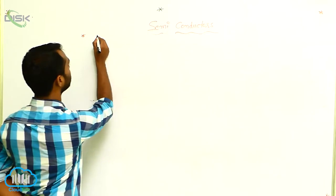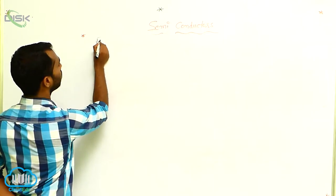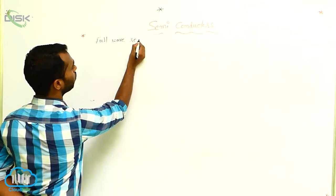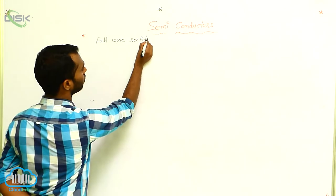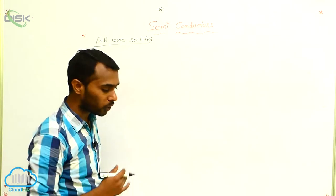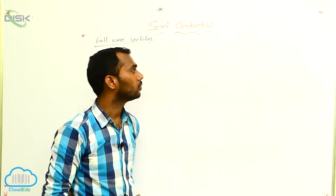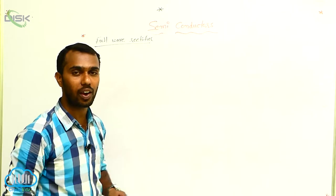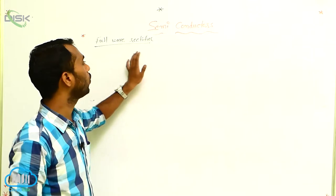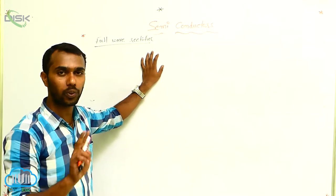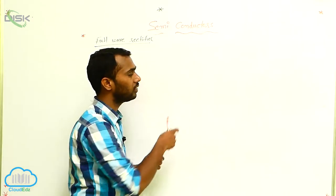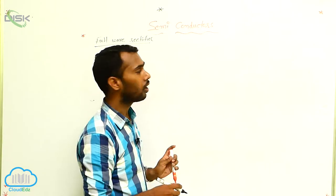Full wave rectifier. We have to draw a circuit diagram. In a half wave rectifier we used only a single diode, but in a full wave rectifier we have to use two diodes — that is the main difference.